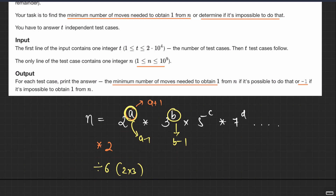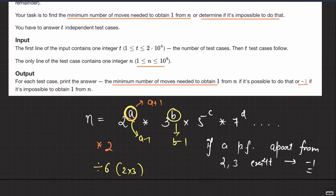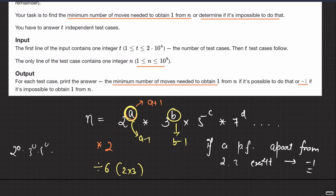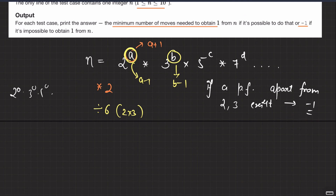Now, one clear observation: if a prime factor apart from 2 and 3 exists, you can never get an answer — it will be minus 1 only. If you have a 5 or 7, you will never be able to reduce that power. The power reduction only happens through dividing by 6, which only affects 2 and 3. What you want in the end is all powers turned to 0, but you have no way to remove the powers of other prime factors. So if you have any prime factor apart from 2 and 3, return minus 1.